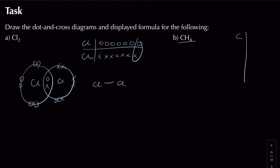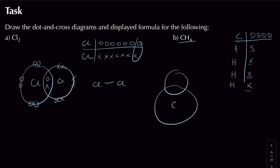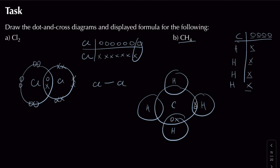For methane (CH₄), carbon has 4 electrons in its outer shell and each hydrogen has 1 electron — but remember hydrogen can only have 2 electrons in its outer shell. Forming four shared pairs gives carbon 8 electrons (4 its own, 4 from hydrogen) and gives each hydrogen 2 electrons (1 its own, 1 from carbon). The displayed formula has carbon in the middle with four single bonds to each hydrogen.